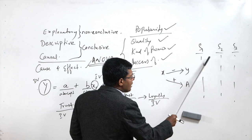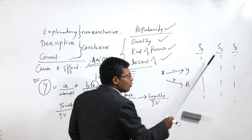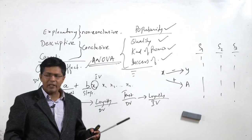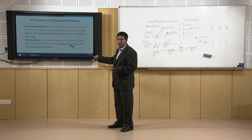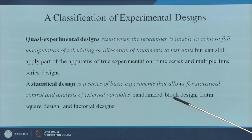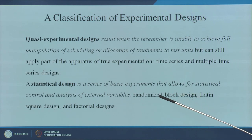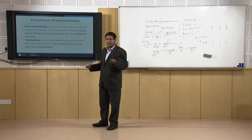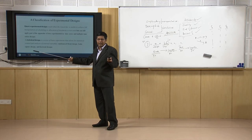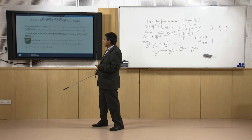We will test whether the sample groups are actually coming from the same population or not. The statistical designs include: completely randomized design, randomized block design, Latin square design, and factorial designs. Latin square design is basically an incomplete factorial design.